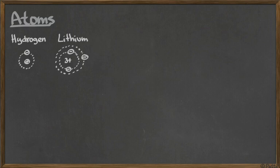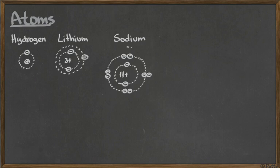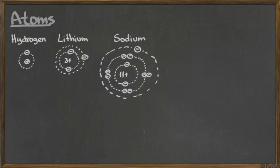So lithium has three electrons. And sodium — another important element for us, because we eat sodium chloride, table salt. Sodium contains 11 protons in the nucleus and it contains 11 electrons flying around it. It contains two in the first shell, so the first shell is complete, eight in the second shell, the second shell is complete, and then it contains one electron flying in the last shell.